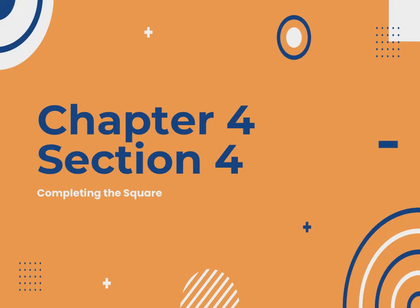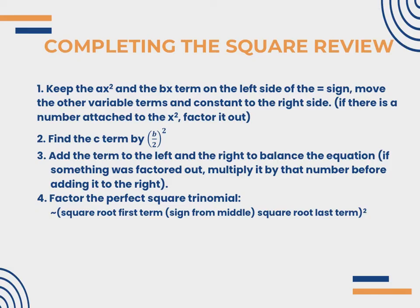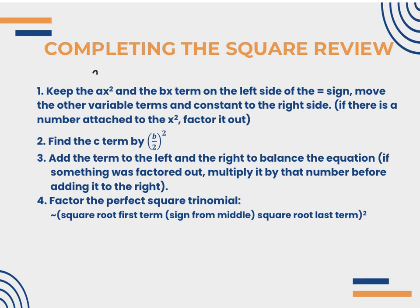To review the steps for completing the square: when it's a hyperbola or an ellipse, we'll have both an x squared term and a y squared term. We're going to leave all the x's and y's on the left side — the only thing we move is the constant. If there's a number in front of your x squared or y squared, remember we have to factor it out before we can start the completing the square process.